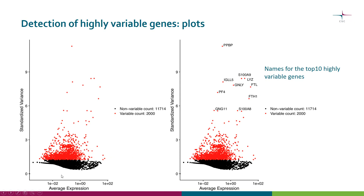Now the plots look different. On the x-axis we again have average expression, and each dot is a gene. On the y-axis we now have the standardized variance. You can see that we no longer have the strong mean-variance relationship — this line is more or less flat. The Seurat tool has colored those 2000 genes with the highest variance in red. In the second plot, it is exactly the same except that the 10 most highly variable genes have also been named.